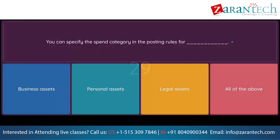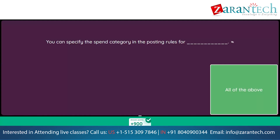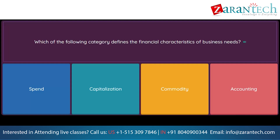Question: You can specify the spend category in the posting rules for. Option 1: business assets. Option 2: personal assets. Option 3: legal assets. Option 4: all of the above. Question: Which of the following categories defines the financial characteristics of business needs? Option 1: spend. Option 2: capitalization. Option 3: commodity. Option 4: accounting.